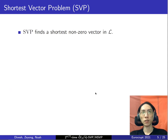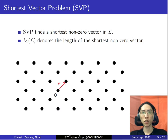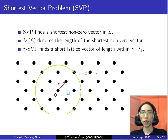Next, let's look at the lattice problems that are the focus of this work. We start with the shortest vector problem, SVP. It looks for a shortest nonzero vector of a given lattice. In the two-dimensional lattice shown here, the red vector v is a shortest vector, and we use lambda_1 to denote its length.